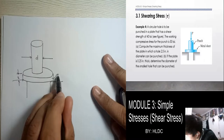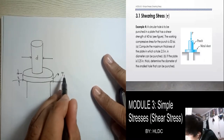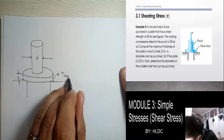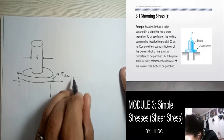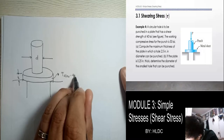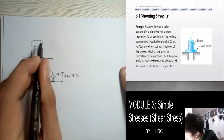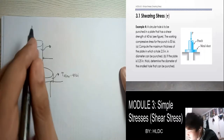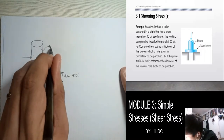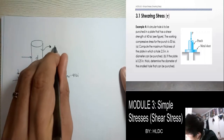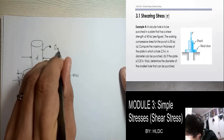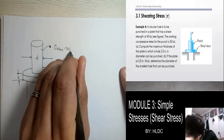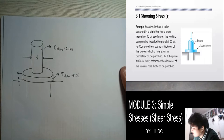For the plate, it only has an allowable shear stress of 40 KSI. And then the punch has an allowable compressive stress — that is, normal stress — of sigma allowable equal to 50 KSI.